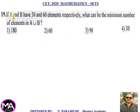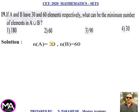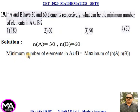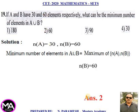19th question. If A and B have 30 and 60 elements respectively, what is the minimum number of elements in A ∪ B? Four options are given. Solution: N(A) = 30, N(B) = 60. Minimum number of elements in A ∪ B = max{N(A), N(B)} = 60. Therefore option second is the answer.